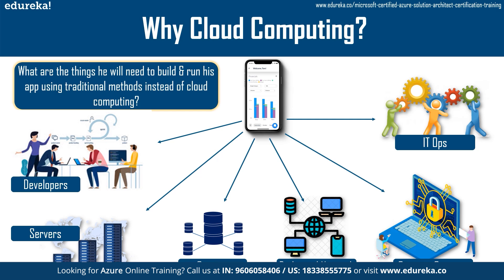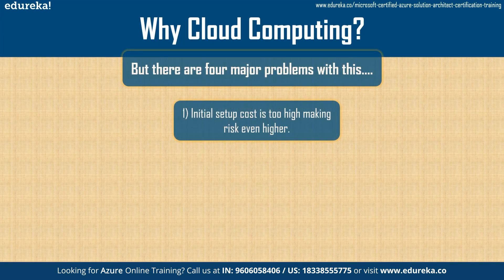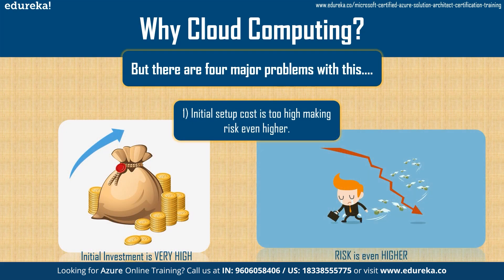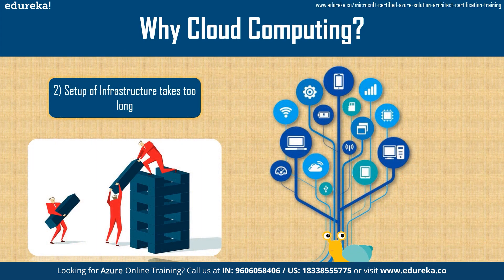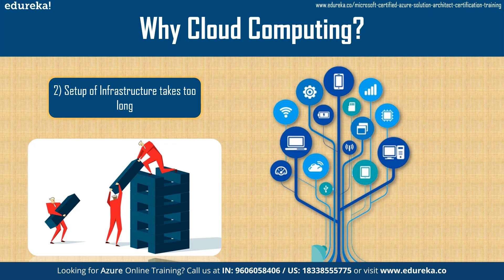John figured there would be four major problems with this setup. The first problem is that owning his own infrastructure would require a huge amount of money, and because of a huge investment in the setup, this would greatly increase the risk if the app fails. The second problem is that the infrastructure would take too long to set up — buying all components, hiring IT technicians to install and connect everything — meaning more money and more time.